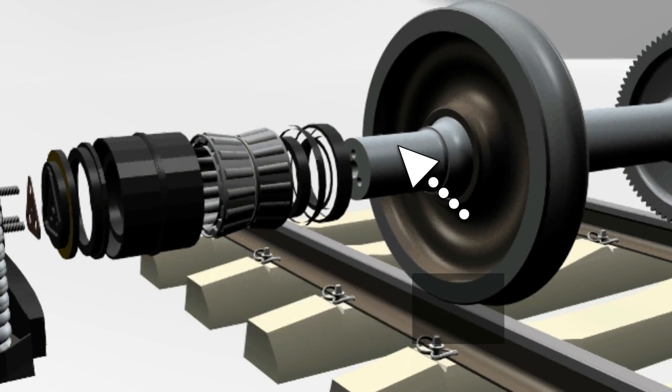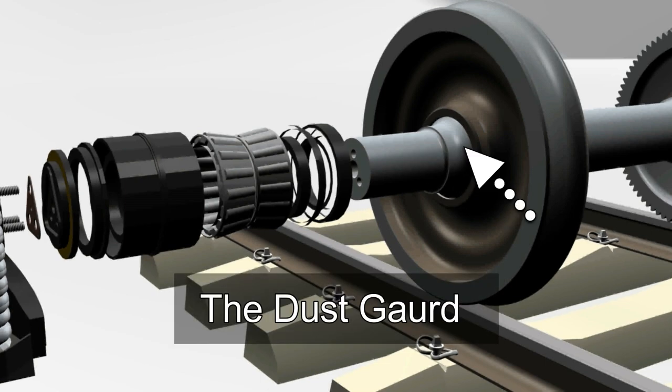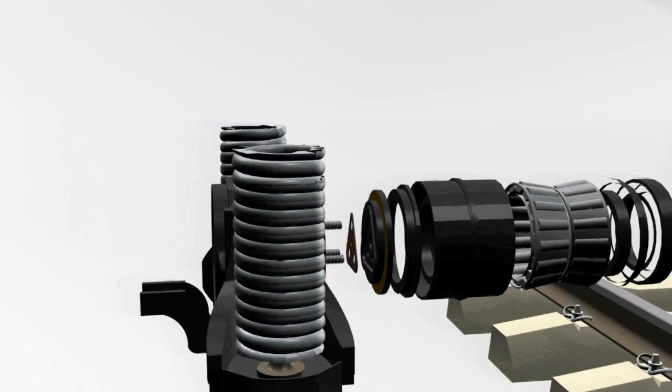The axle journal. The journal fillet. The dust guard. Let's go back to the axle box and its components.